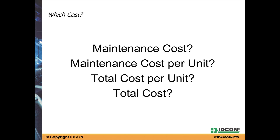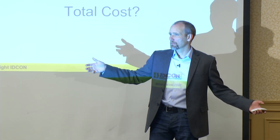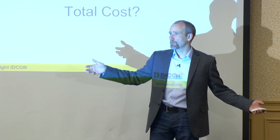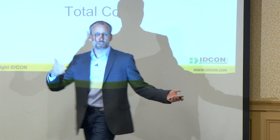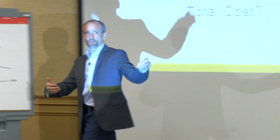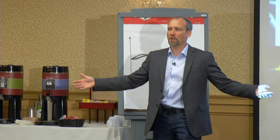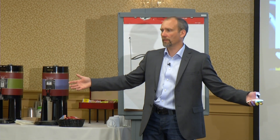Is total cost important? The total cost number — 15 million, if that's our total cost — that's pretty irrelevant. Which depends on how many units. If I make one unit, one ton, one square foot, then the total cost is really irrelevant.